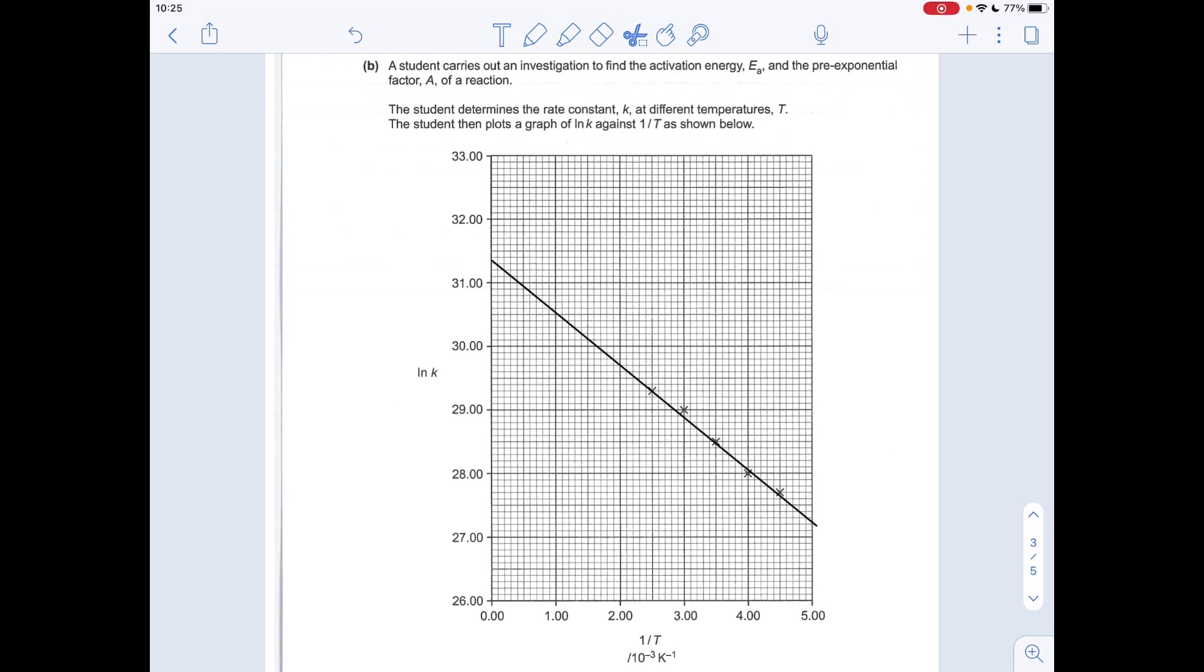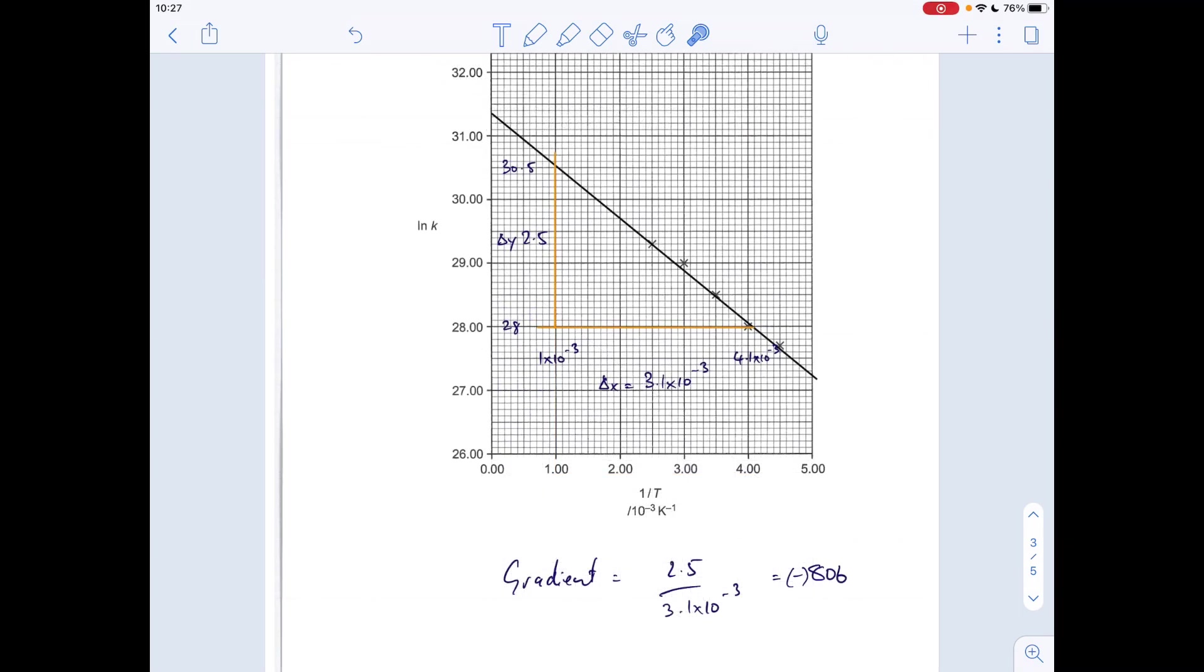Right, so the next thing I'm going to do is work out the gradient. So I need to work out the change in Y over the change in X. So for my change in Y, I've gone from 30.5 to 28. And my change in X, I'm going from 4.1 times 10 to the minus 3 to 1 times 10 to the minus 3. So if I do that, divide it by that, I'm going to get my gradient. So you can see that's coming out at 806 using my numbers.